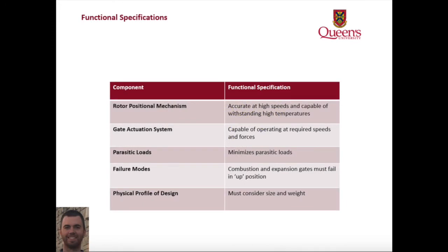In order to quantify a successful design, a number of requirements needed to be filled. The rotor positional mechanism must be accurate to within one degree when the engine is turning at 3600 RPM, and must also be able to withstand temperatures in the range of 150 degrees Celsius. The gate actuation system must move the required 10 millimeters in less than a 90 degree rotation of the rotor, which is approximately 4 thousandths of a second when the rotor is spinning at 3600 RPM. It is important that the solution minimize the use of the engine's power to activate its gates. The design must also be both small and light. Finally, in the result of a system failure, the design must ensure that the gates are in the up position so as to prevent the rotor from smashing them.